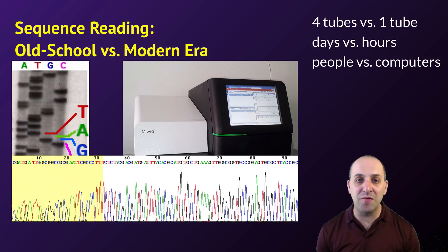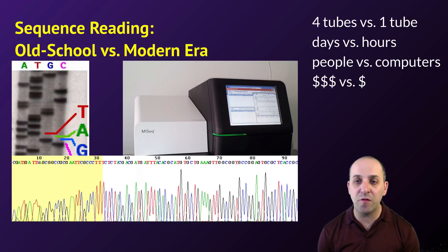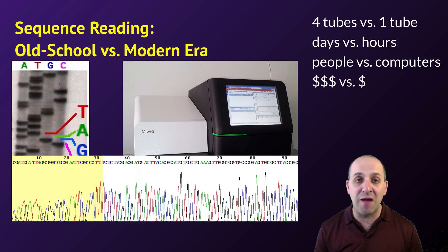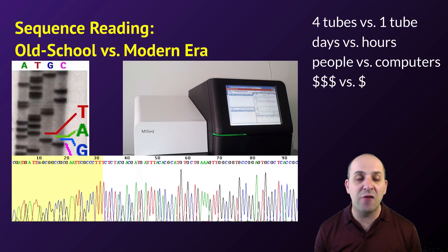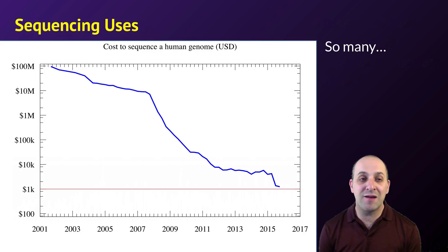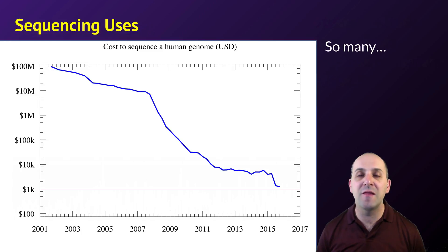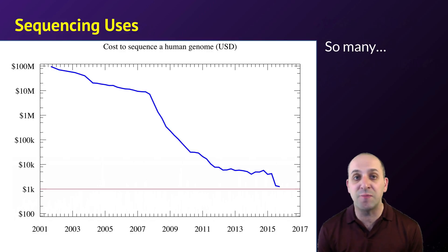Computers are much better at reading sequence information than people are. What you see is a computer-generated readout of the sequence information of a piece of DNA. Modern approaches are much cheaper — entire genomes can be sequenced over the span of a couple of hours. In fact, the cost of sequencing an entire human genome has dropped 100,000-fold over the last 15 years or so, and the types of science that cheap sequencing has enabled has exploded over that same span of time.